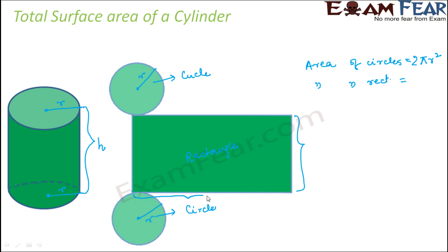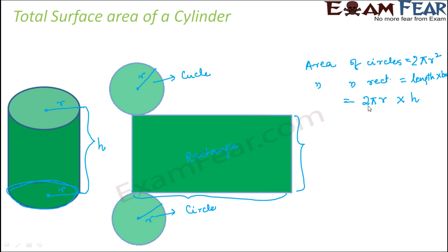What about the length of the rectangle? When you fold it to form the cylinder, this length becomes the circumference of the circle — just visualize it closely. If you take a sheet of paper in the shape of a rectangle and fold it to form a cylinder, you would see that the length of the rectangle actually forms the circumference of the circle. So the length is equal to the circumference of the circle, which is 2πr. The breadth is the height of the cylinder, that is h. So therefore the area of the rectangle is 2πrh.